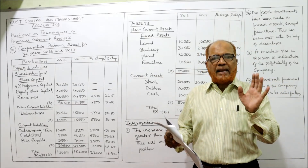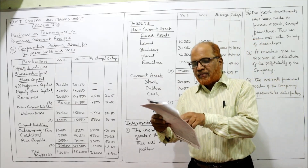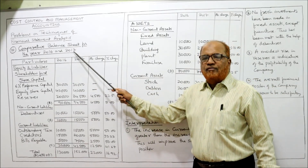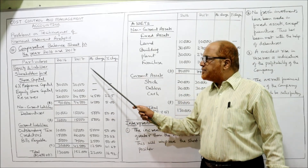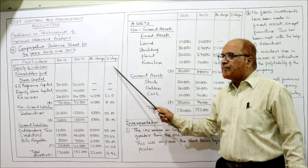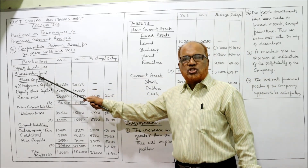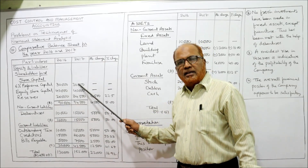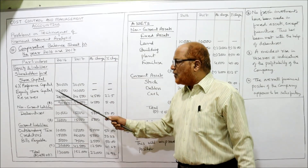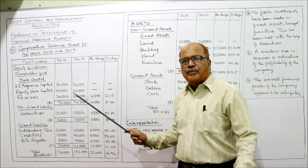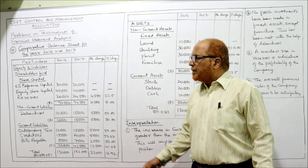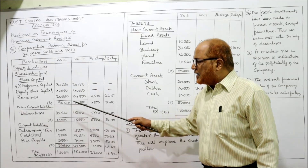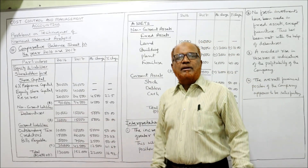The comparative balance sheet for years 16 and 17 has four columns: last year (2016), current year (2017), absolute change, and percentage change. Under equity and liabilities, shareholders fund includes 6% preference share capital at 30,000 for both years, equity share capital at 40,000 for both years, and reserves and surplus at 20,000 (last year) and 24,500 (current year). Total shareholders fund: 90,000 last year and 94,500 currently.